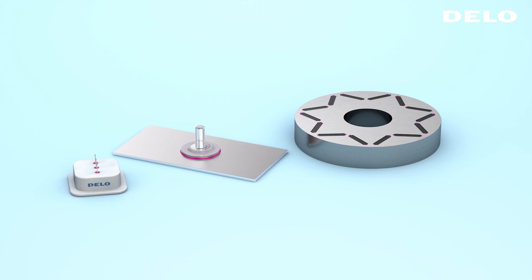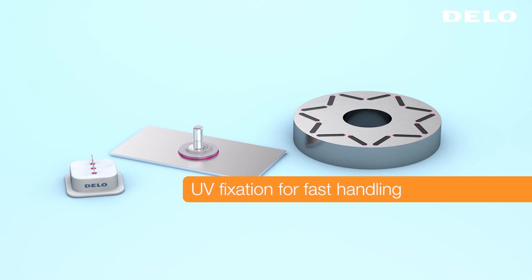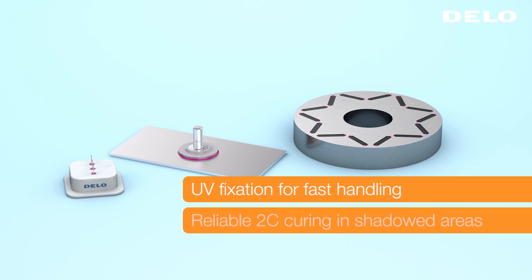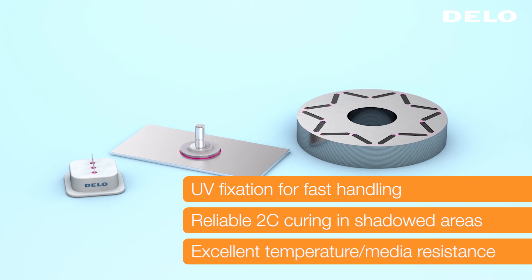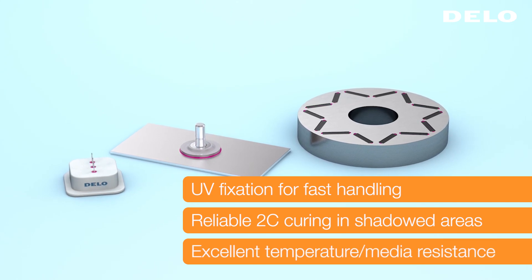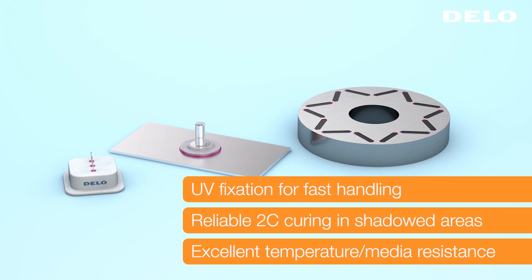With the new hybrid chemistry by DELO users can increase UPH by fast UV fixation of two component products combined with reliable curing in shadowed areas. Furthermore users benefit from the typically high temperature and media resistance of two component products.